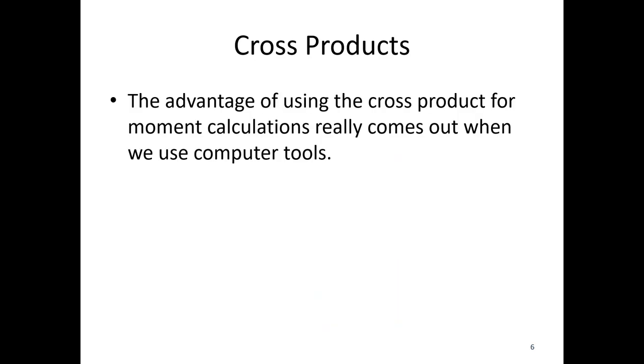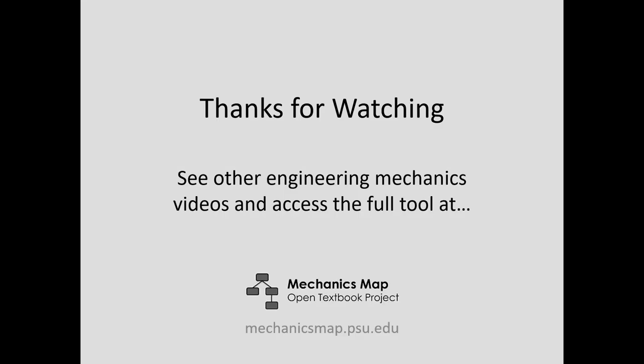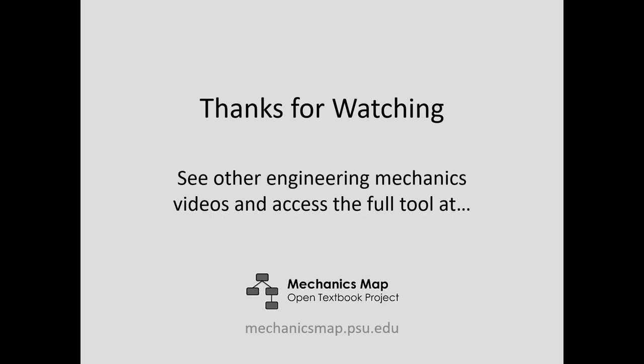The advantage of using cross product for moment calculations really comes out when we use computer tools. We can do that by hand, but a computer can do that much faster than we can. We can calculate cross products in MATLAB. We can calculate cross products with online tools, such as Wolfram Alpha. When we do that, we're going to save ourselves some time, particularly if we're working with complex 3D problems where we have the components. That's all we have for today's video lecture. Thank you for watching and I hope to see you again.